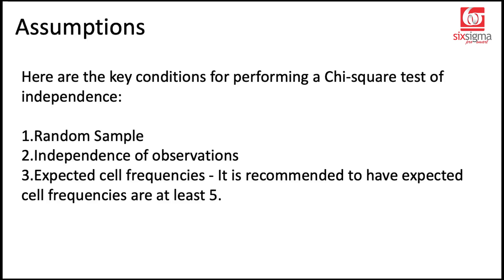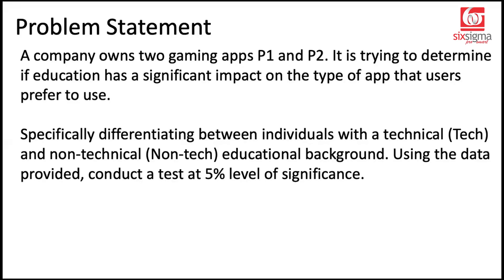When I show you the hands-on demonstration, it will become clearer. Let's move to a problem statement. A company owns two gaming apps, P1 and P2, and is trying to determine if the education of users has a significant impact on the type of app they prefer — specifically differentiating between individuals with a technical versus a non-technical educational background. Using the data provided, we need to conduct a test at a five percent level of significance.